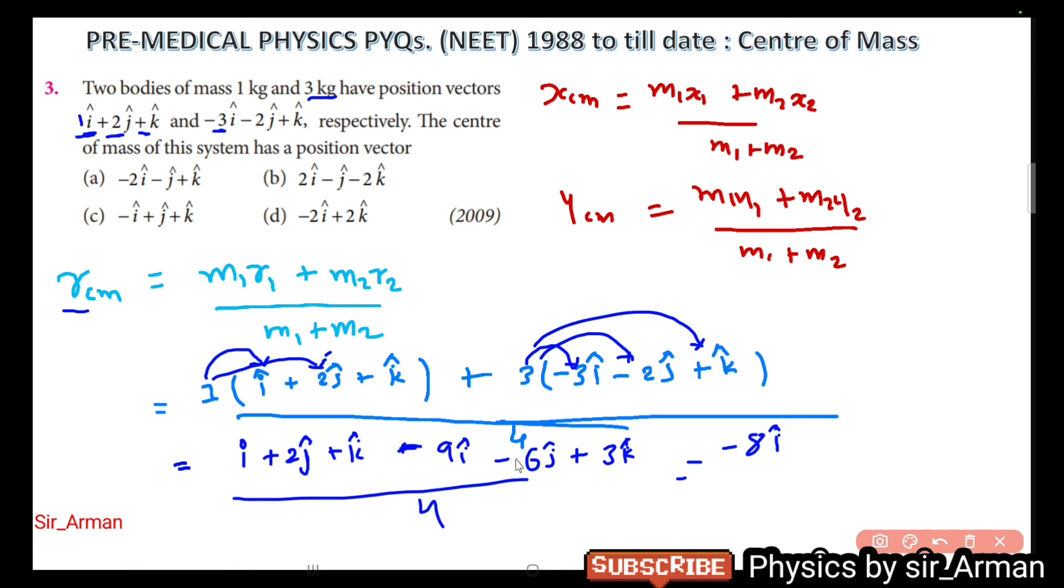Then plus 2j and minus 6j, so it is plus 2j and minus 6j, which is minus 4j. And at last it is plus k and plus 3k, which is plus 4k, divided by 4. So if you divide all the numbers by 4 you will get minus 2i, then minus j, and plus k. Divide 4 by 4 is 1, so it is 1k or just k.